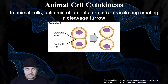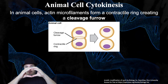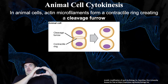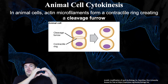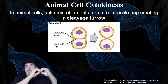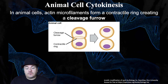Actin microfilaments create this contractile ring, which contracts. The cell starts contracting in the middle, forming a groove called the cleavage furrow. It keeps contracting until it actually pinches the cell into two separate cells. That's how animal cells do cytokinesis.